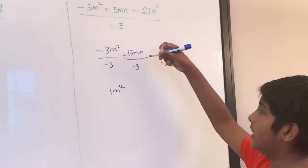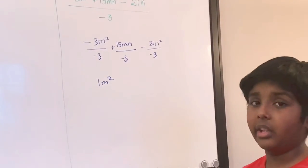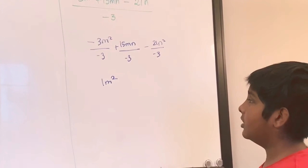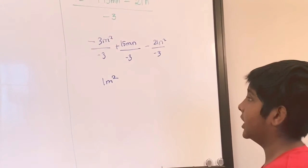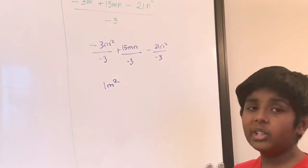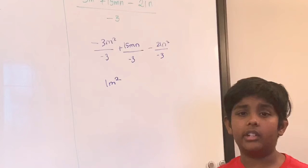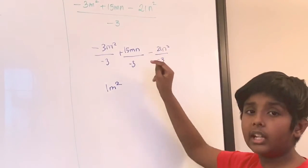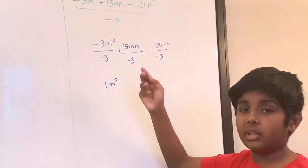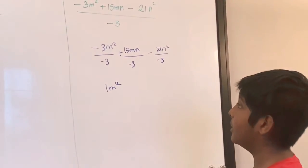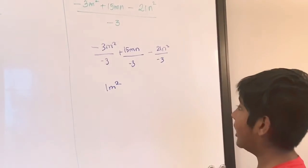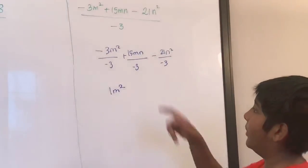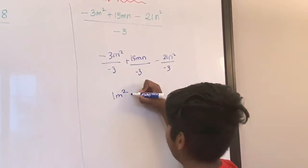15mn divided by negative 3: 15 divided by 3 is 5, but we're dividing a positive number by a negative number, so our answer is going to be negative. So our answer is negative 5mn, because there's an mn right there.